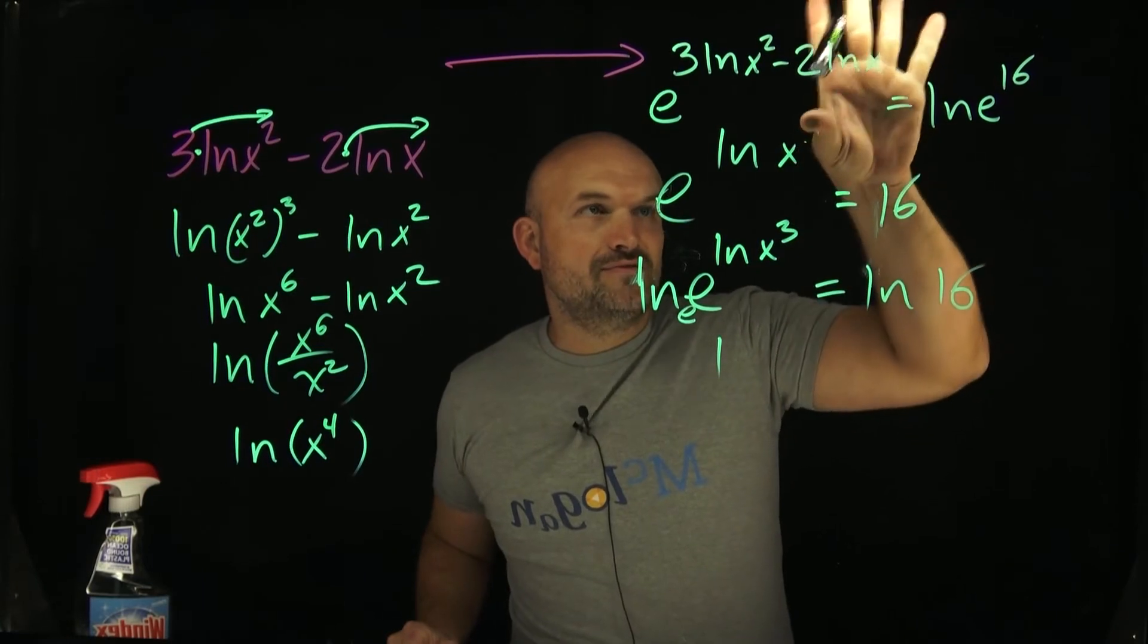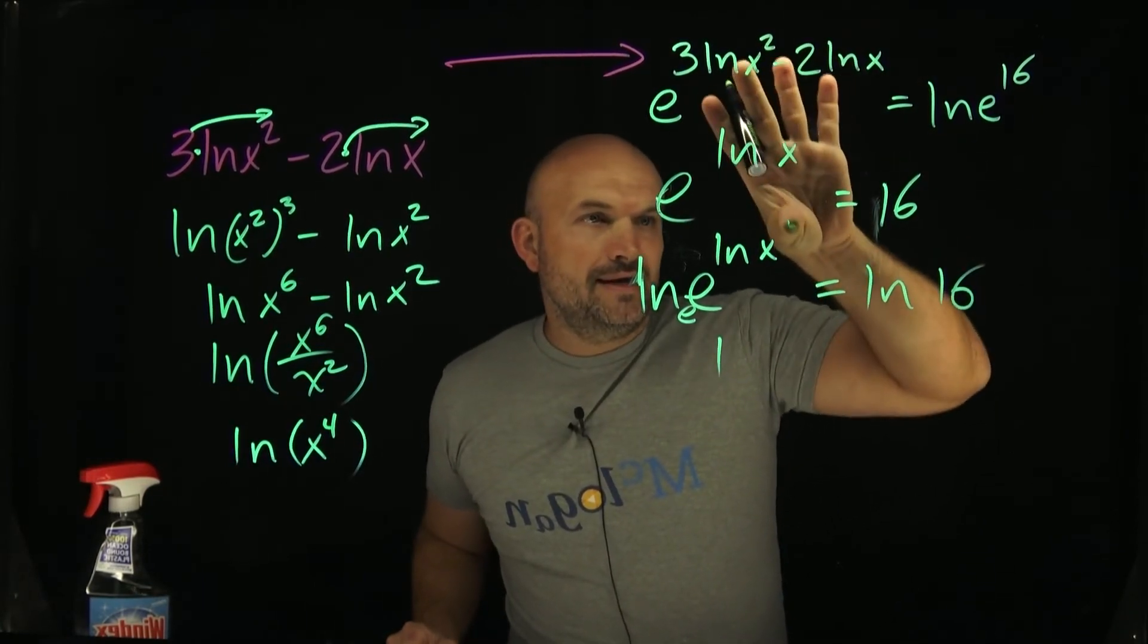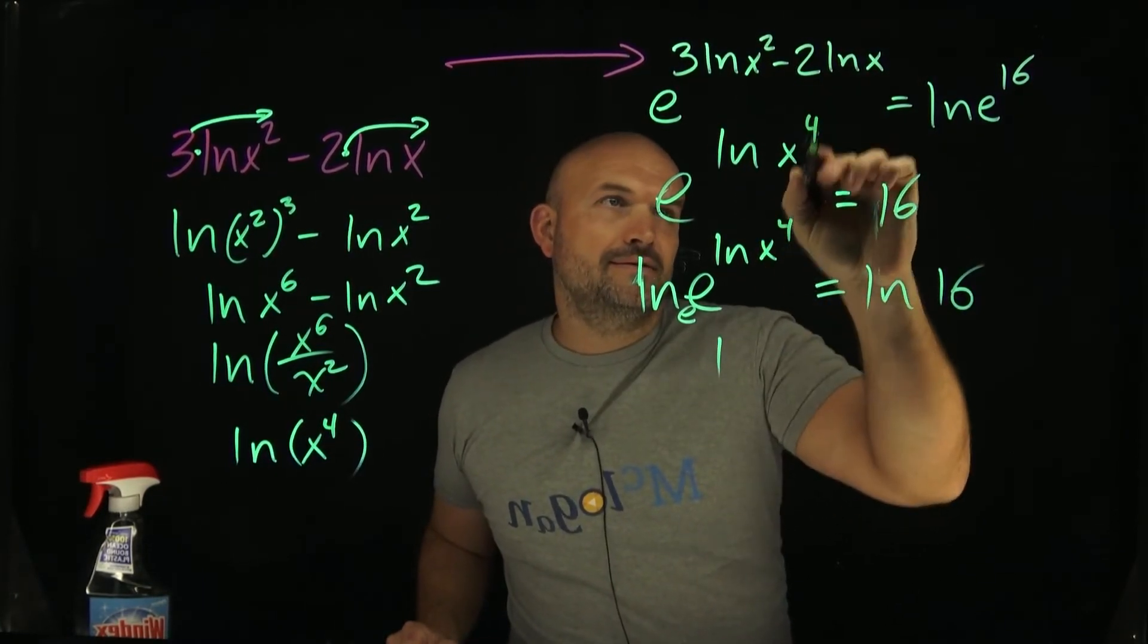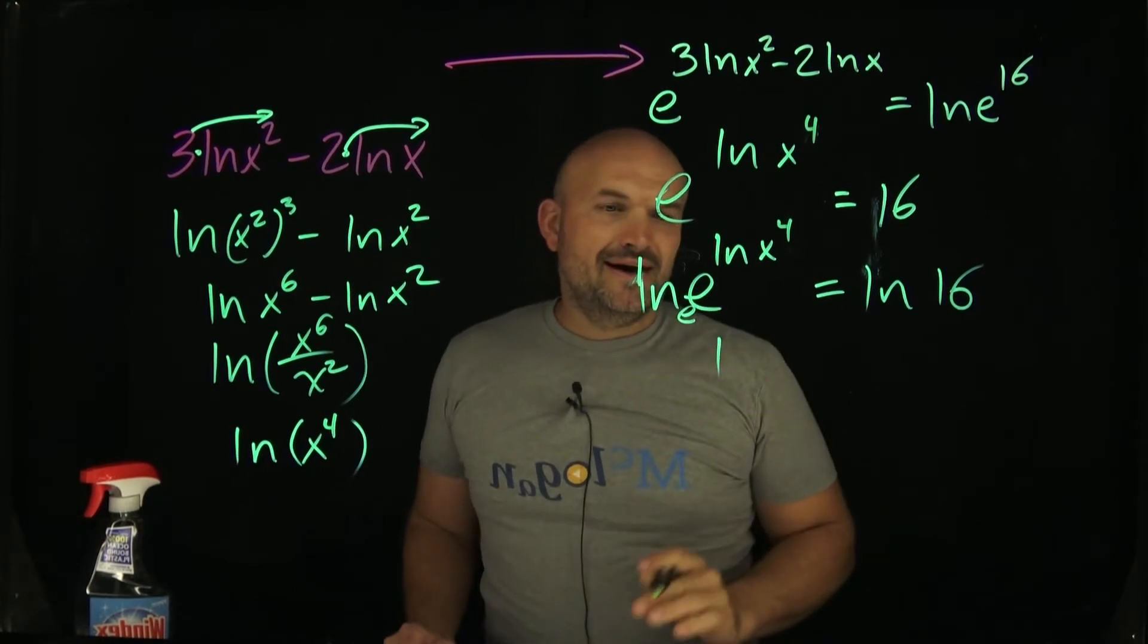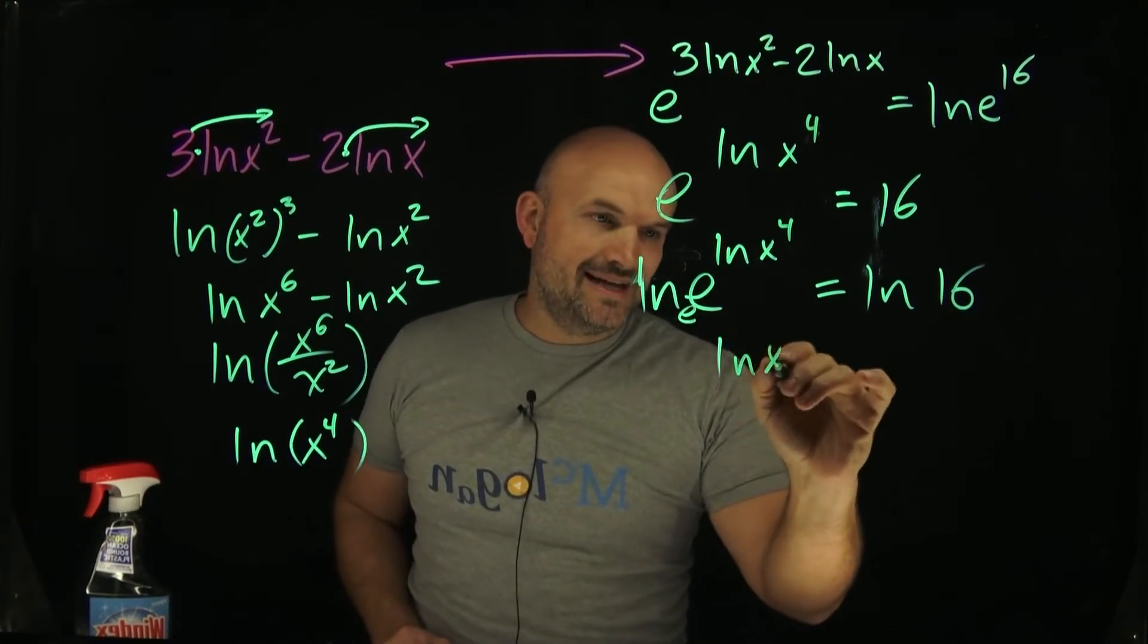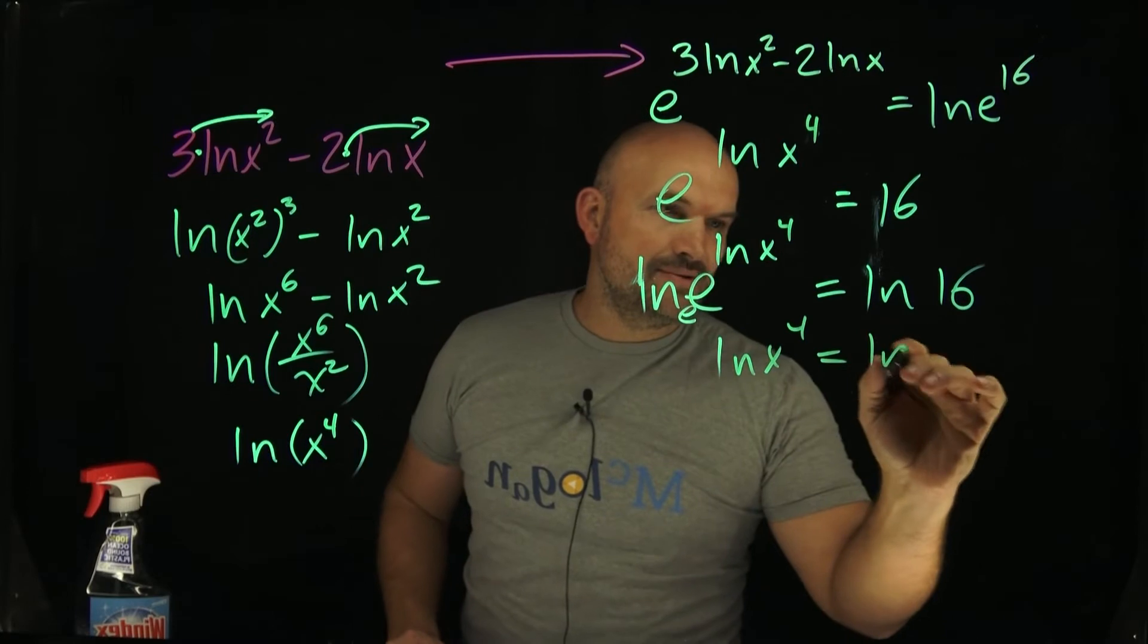So that's going to be x to the fourth. So therefore, these are all x to the fourth. And man, okay, there you go. So be careful. So now I'm going to have ln x to the fourth is equal to ln of 16.